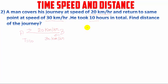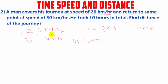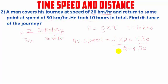We know that distance is equal to speed multiplied by time. Time is given as 10 hours. We need to find the average speed. Since the distance from A to B and B to A is the same, we can use the formula: average speed = 2 × 20 × 30 divided by 20 + 30, which gives 1200 by 50, that is 24 km per hour.